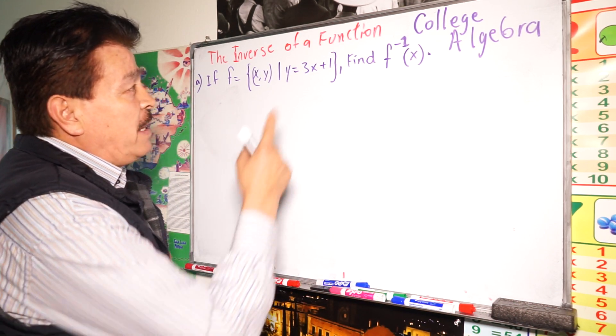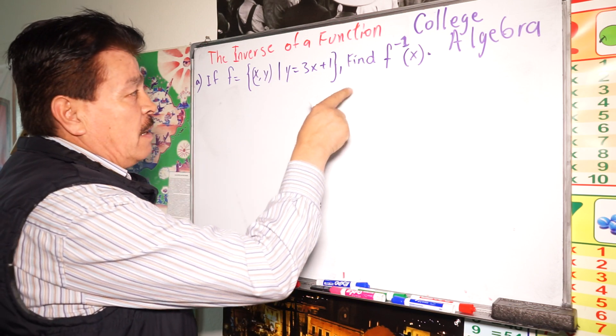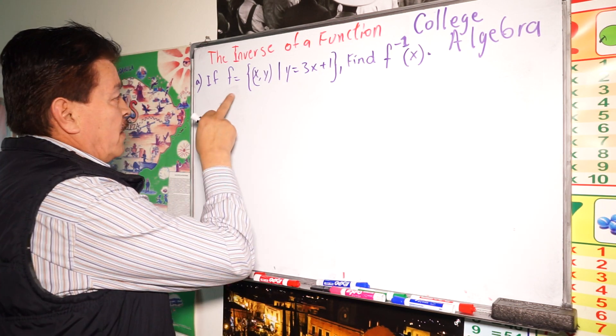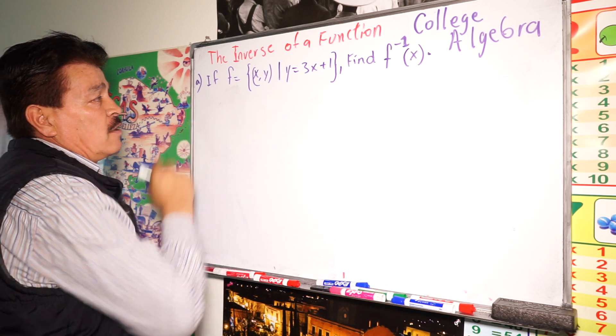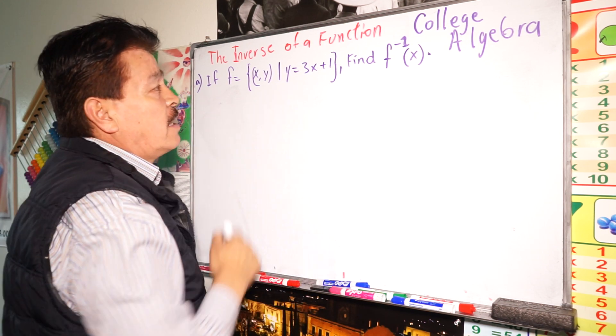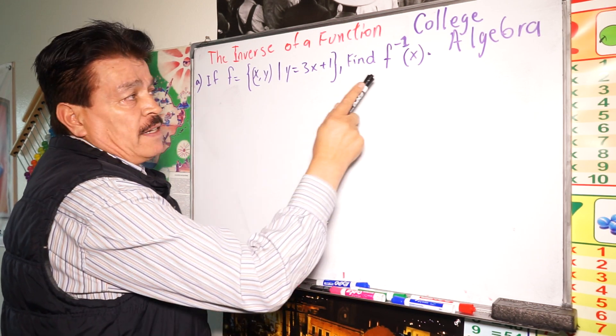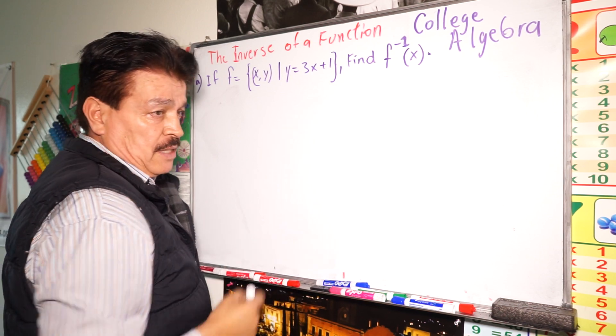To explain that topic, I have one problem here. So, if f of x is equal to y, such that y equals 3x plus 1, find the inverse of f, okay?